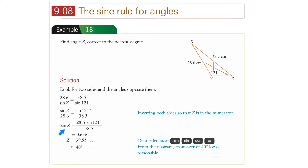We put all the numbers in and we've got sine Z equals 28.6 times sine of 121 degrees over 38.5. Then using the calculator, use the sine to the minus 1 key — don't knock it down to a decimal yet, just leave everything as is. Use shift sine and you'll get an angle of 39.55 degrees, which is approximately 40 degrees to the nearest degree. We expected it to be less than 121, which it is.